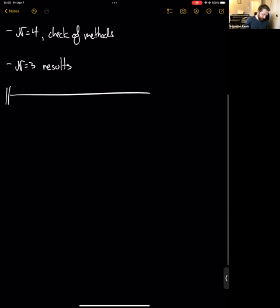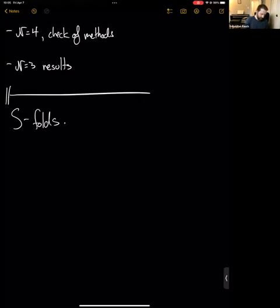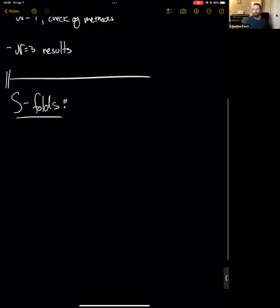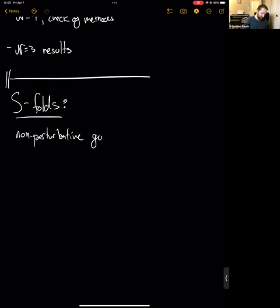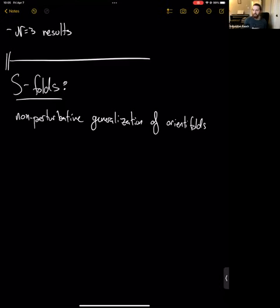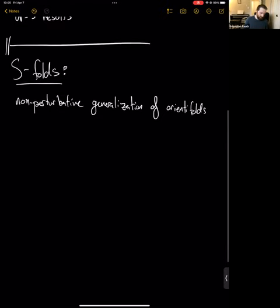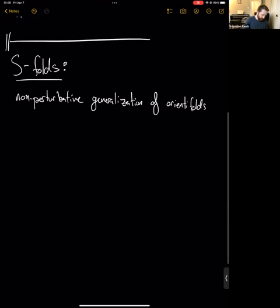First I want to talk about what S-folds are. Feel free to interrupt if something's unclear. We should think of S-folds as a non-perturbative generalization of orientifolds. Orientifolds are a Z2 quotient of spacetime paired with an orientation-reversing action. Instead of thinking of orientifolds as a separate Z2 action on spacetime with the worldsheet parity Ω, we're going to think of Ω as living in the type IIB string theory self-duality group SL(2,Z).